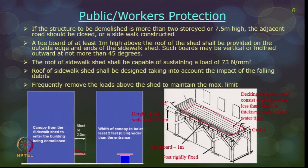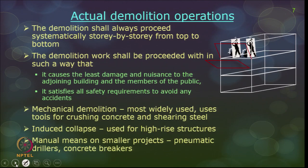If the sidewalk shed is some distance from the actual structure to be demolished, a canopy structure can be installed to connect them. The canopy should be at least 8 feet (2.5 meters) in width and at least 2 feet wider than the entrance where workers enter, so that falling debris does not land on workers entering the structure.